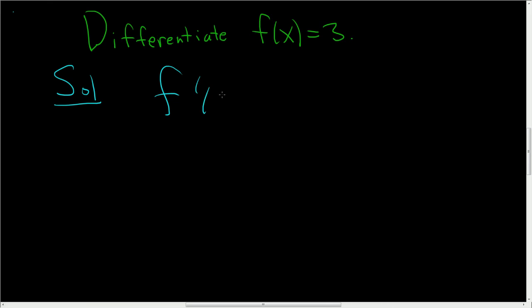The derivative is 0. That's it. We're done. Let's think about why. Whenever you have a constant function, so in this case our constant function is f of x equals 3.